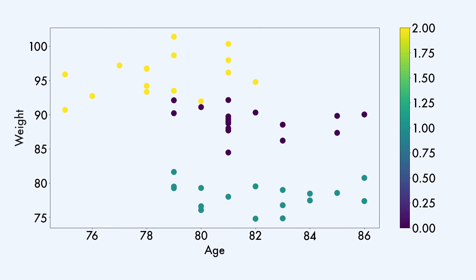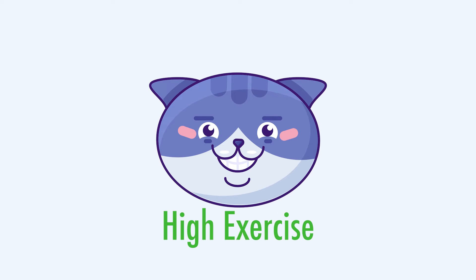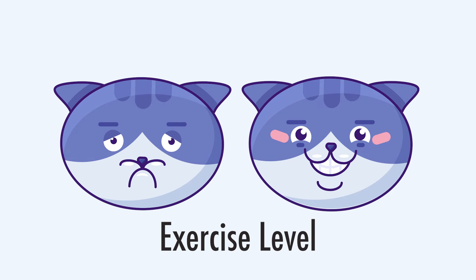The feature of age is a numerical feature, and the feature of weight too. These two features can be represented by numbers. However, it is trickier to deal with the feature that characterizes the exercise level. This feature is categorical — it either represents low or high levels of exercise. We do not know the relative position of low versus high, and it is not trivial to represent this feature numerically. We will see later what we can do with this feature.